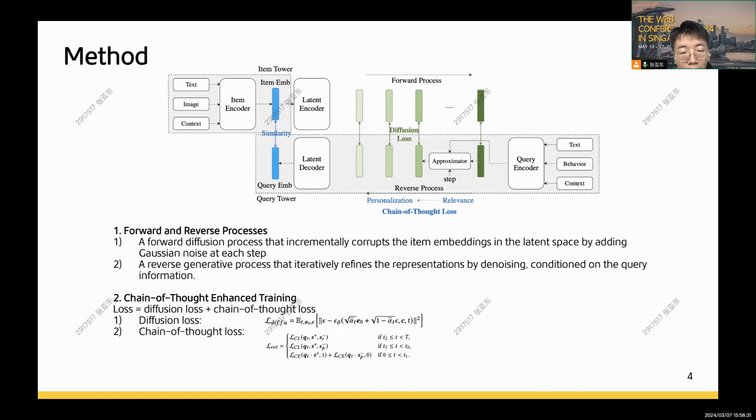Second, we introduce chain-of-thought enhanced training. Our loss function comprises two parts: diffusion loss and chain-of-thought loss. This dual-structured loss function ensures that our model learns effectively from both the diffusion process and the chain-of-thought guidance.